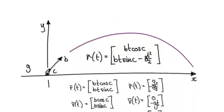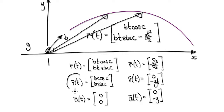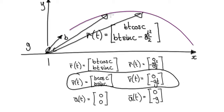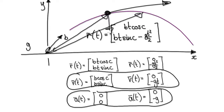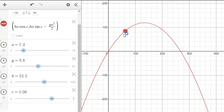In the previous video we worked out the position vector of a cannonball, so at each step we always know the position vector. In this video we are going to append the velocity vector. Our cannonball is currently at a certain position, and we will append the velocity vector and then the acceleration vector to our cannonball.